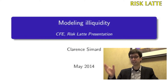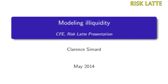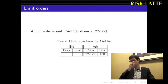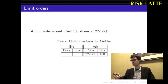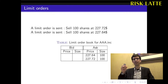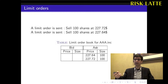I prepared a little example just to see how it works. On slide one, we suppose that a limit order is sent to sell 100 shares at $227.72. This order is stored in the ask part of the limit order book. Suppose a second limit order is sent to sell 100 shares at $227.64. We see that this order has a better price, so it takes the first place in the limit order book.